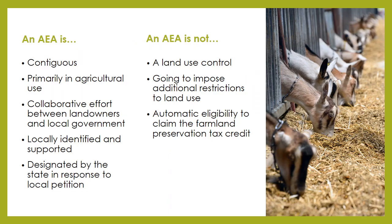Now let's talk about what an AEA is and is not. An AEA is contiguous, meaning that parcels are connected to each other and not otherwise separated except by roads, utility right-of-ways, or bodies of water. Lands in the AEA are primarily in agricultural use. Examples of agricultural uses include commodity cropping, livestock production, beekeeping, Christmas tree production, forest management, and other federal or state agricultural land conservation programs.